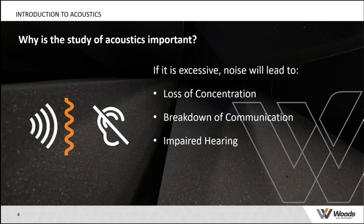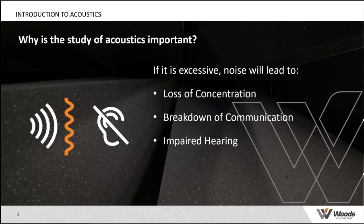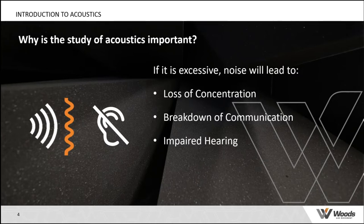Why is it important? First, if noise is excessive it can lead to a loss of concentration. For a brain surgeon operating, you wouldn't want to be disturbed by noise from the ventilation system — the noise level must be appropriate for the activity. At higher levels it leads to a breakdown of communication. In an underground tunnel environment, safety advice may be drowned out by ventilation noise. And if levels continue to rise, they can impair or permanently damage your hearing.